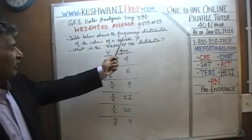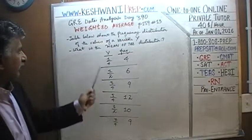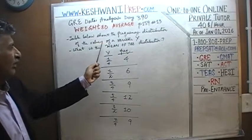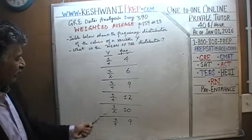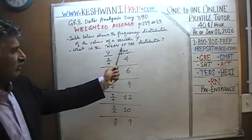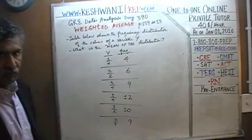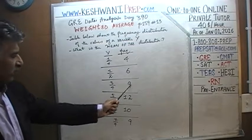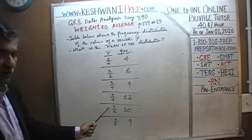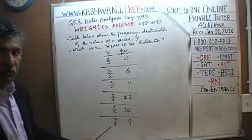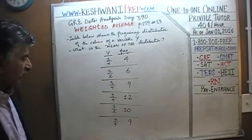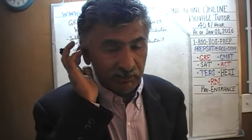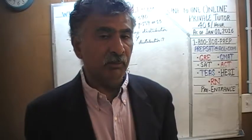We are given a table that shows the frequency distribution of a variable Y. The question is: what is the mean of the distribution? One quarter appears four times, a half appears six times, three quarters appears nine times, five quarters appears twelve times, three halves appears ten times, and seven quarters appears nine times. What is the mean value of the variable Y?